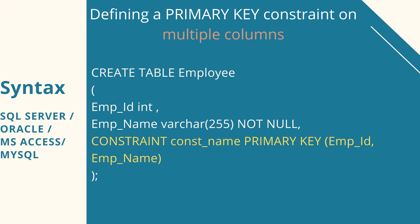When you want to define a primary key constraint on multiple columns, the syntax is like this: at the bottom we write CONSTRAINT, then the constraint name, then PRIMARY KEY, followed by brackets containing the column names — in this example, employee ID and employee name. I hope you like this video, please do subscribe.